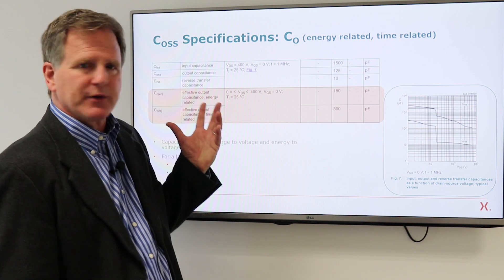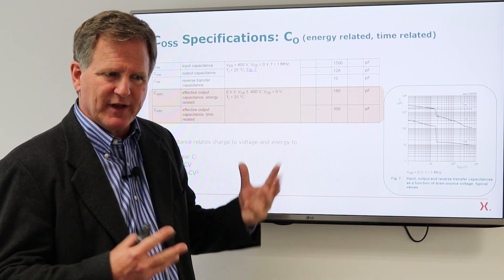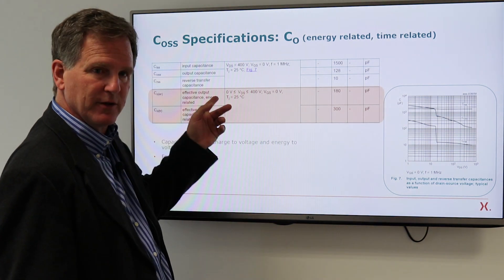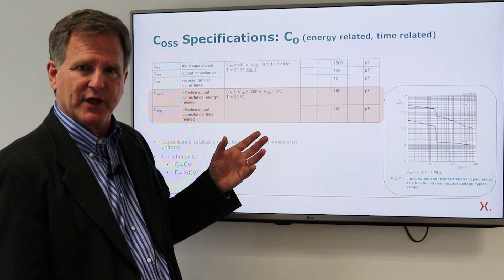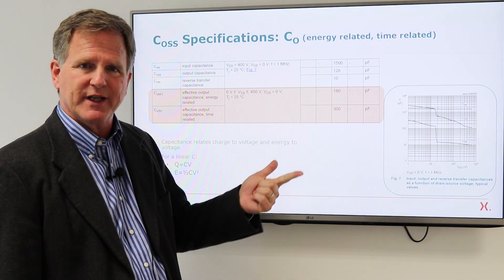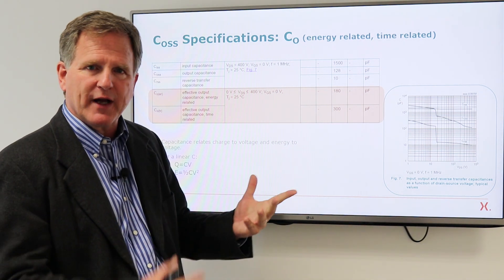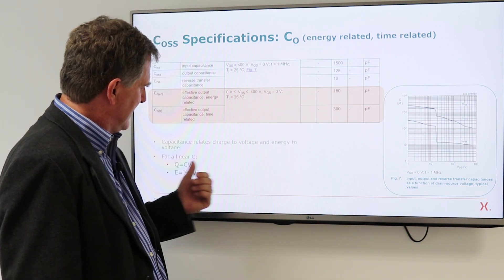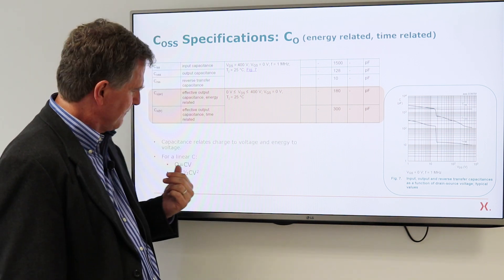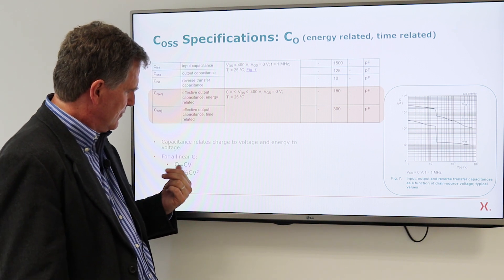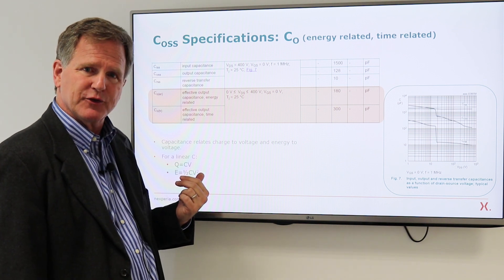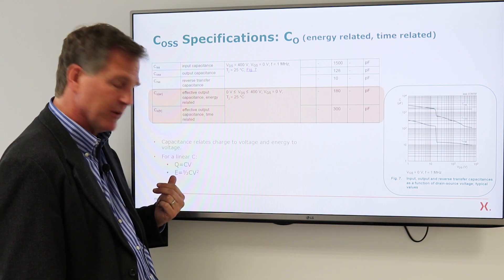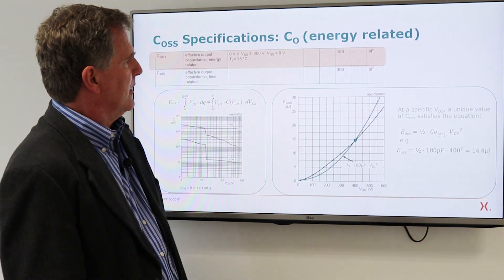And because small signal capacitance is not a very useful parameter for switching circuits, the industry has come up with two additional output capacitance parameters, one related to energy and one related to time, to help you evaluate how the capacitance works in your circuit. And that's understood based on the two functions that capacitance tells you. One is it relates charge to voltage, and the other is it relates energy to voltage.